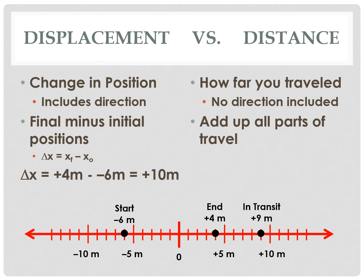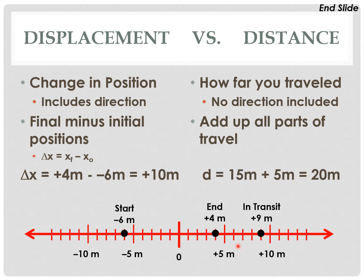To figure out distance, we have to account for each part that we move. The fact that we went to 9 meters does matter for distance because you had to travel further to get back. From negative 6 to positive 9 is 15 meters, and from positive 9 to positive 4 is 5 meters — a total distance traveled of 20 meters. That's quite different from displacement: displacement is positive 10 meters to the right, while distance traveled is 20 meters with no direction.